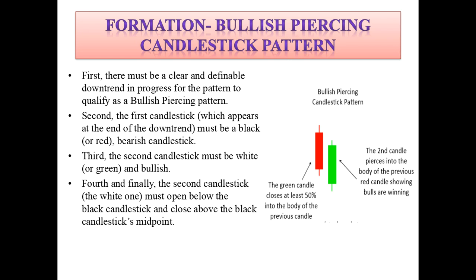Here is the formation of the bullish piercing candlestick pattern. First, there must be a clear and definable downtrend in progress for the pattern to qualify as a bullish piercing pattern. Second, the first candlestick, which appears at the end of the downtrend, must be a black or red bearish candle — as seen in this image, this is the red bearish candle. Third, the second candlestick must be a white or green bullish candle.